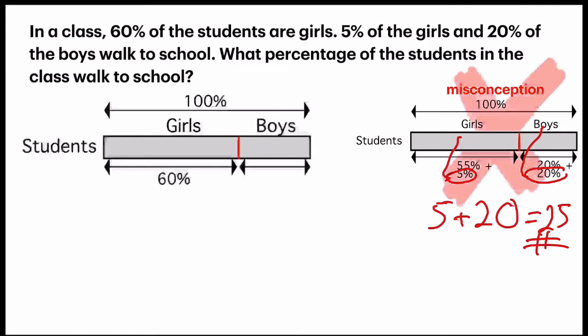In the statement, it says 5% of the girls. So there are 60% of girls, so we are finding 5% of 60%. Now one way to look at this question easier is to change this percentage into a fraction. So if I have 5%, I can change it to 5 out of 100 and then simplify it.